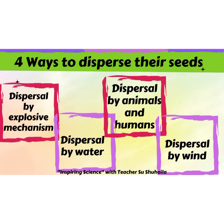There are four ways to disperse seeds: dispersal by explosive mechanism, dispersal by water, dispersal by animals and humans, and dispersal by wind.